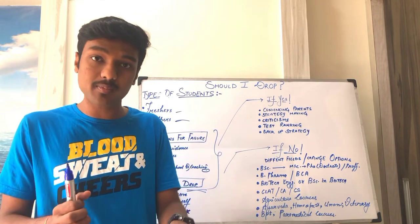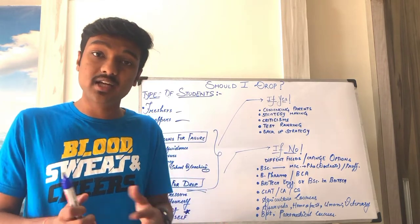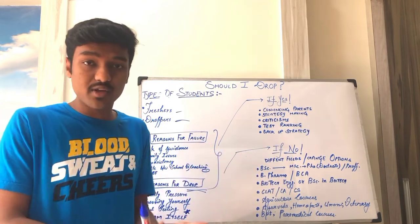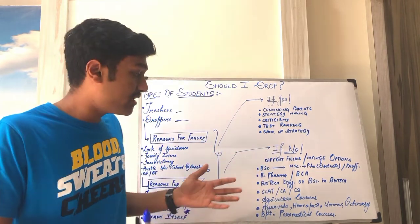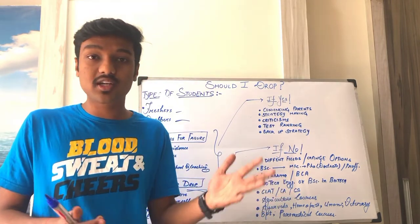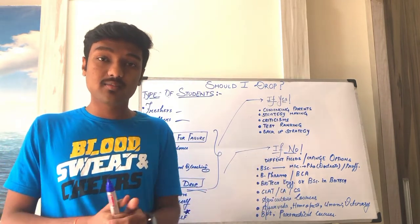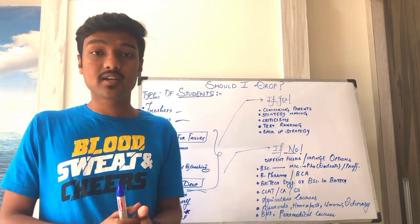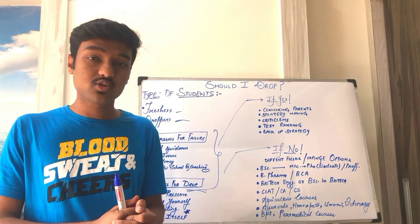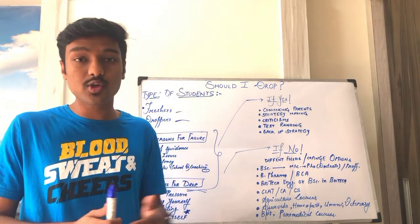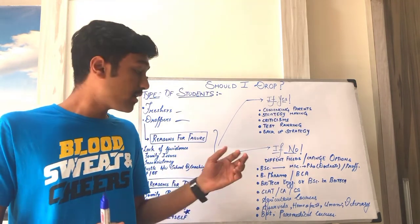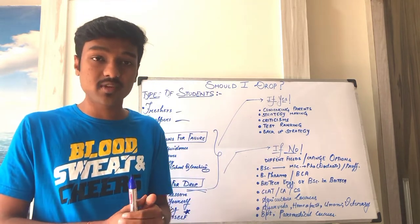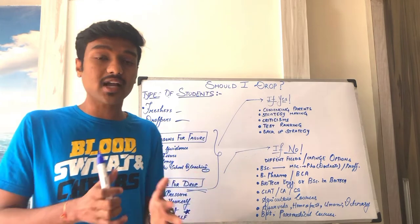And then, you can take a 1-year drop and study commerce and totally change your field, then you can prepare for CA or CS. Or Ayurveda, Unani, Homeopathy, and veterinary - these are all options. In Ayurveda, you know Balkrishna and Baba Ramdev who have been standing behind such a big company, Patanjali. You can also go into the paramedical field or Bachelors in Physiotherapy. These were the options if your answer is no.